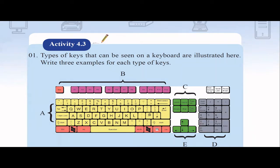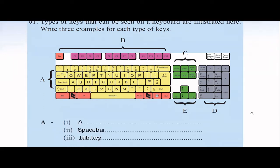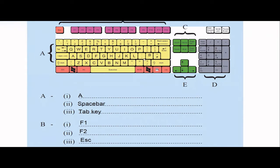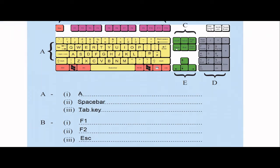In activity 4.3, a keyboard diagram shows different types of keys categorized by color. They ask you to write three examples for each type. For category A, you can write any letter or number characters. For category B, it includes the escape key and all function keys — you can write F1, F2, etc. For category C, the green-colored keys include Insert, Home, Page Up, Page Down, End, and Delete.